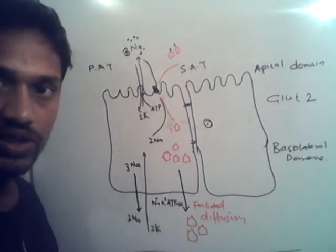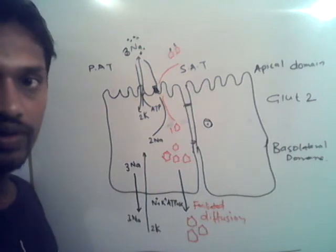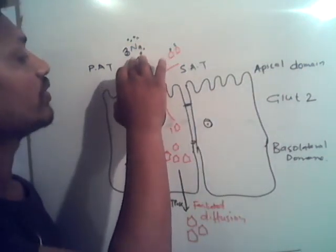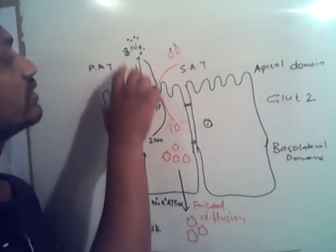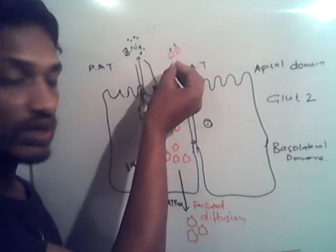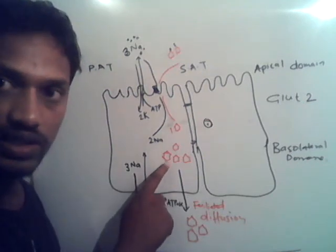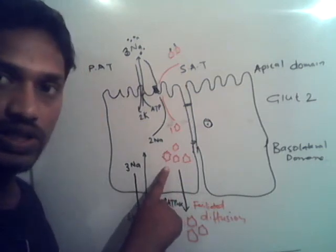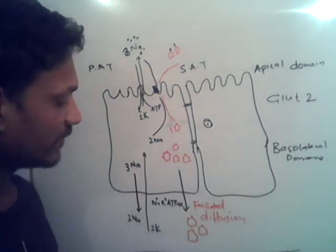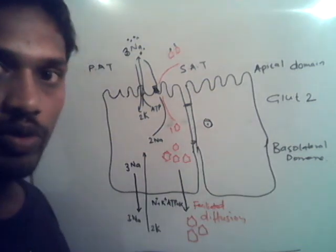How does transport take place across the epithelial cell? This is the best example. In summary: three sodium ions are transported out across the apical domain and two potassium ions come inside the cell. The sodium concentration gradient is used to bring glucose inside against the concentration gradient — secondary active transport. Glucose, due to its higher concentration inside, then crosses the basal domain via facilitated diffusion. Sodium is transferred outside by the sodium-potassium ATPase pump.